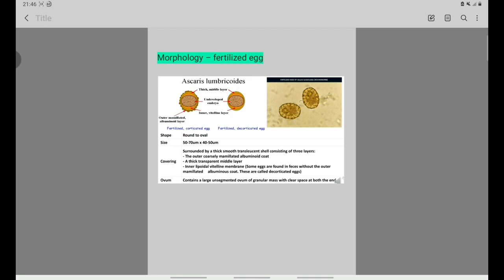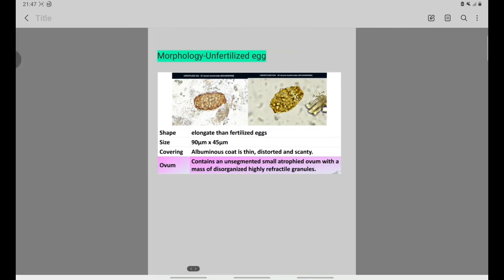The fertilized eggs have coverings: the outer mammilated albuminoid layer, thick middle transparent layer, and inner lipoidal vitelline membrane. Decorticated eggs have the outer layer removed. Unfertilized eggs show a large unsegmented granular mass.